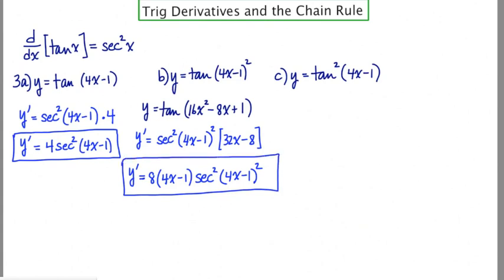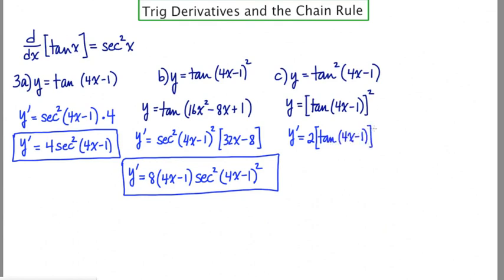Now the last problem — the C-level problem — is the hardest of all. My first step is to rewrite this using brackets, all to the power of 2. Now I'm ready to find the derivative using the general power rule: bring the 2 down in front, rewrite the stuff in the brackets, drop the power from 2 to 1, multiply by the derivative of the inside, which is secant squared(4x − 1), and then the derivative of the argument, which is 4. You just keep chaining until there's no more inner function.